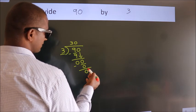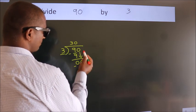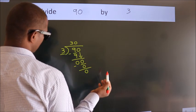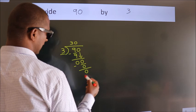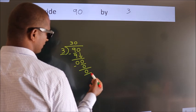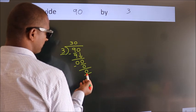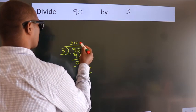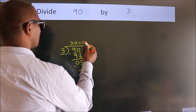After this, there are no more numbers to bring down. We got remainder 0. So this is our quotient.